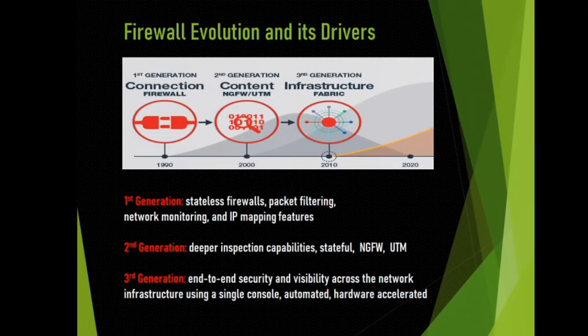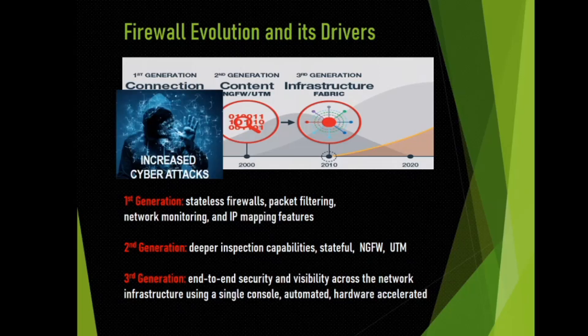Let's see how firewalls evolved and the main drivers of their evolution. First generation firewalls, also known as stateless firewalls, block or deny traffic based on either the source or destination IP, including port numbers. With the increased number of cyber attacks, they evolved to the second generation — also known as UTMs or next generation firewalls — which offer deeper packet inspection with tools like web filtering, antivirus, intrusion prevention system, and application control. Most firewalls in production today are these.